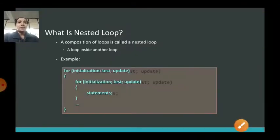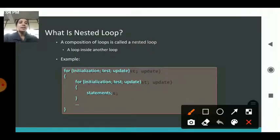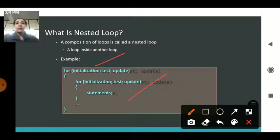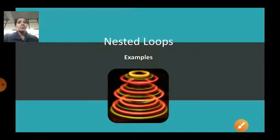Another part of for loops is your nested loop. Nested is nothing but within a loop you have another loop — then it is said to be a nested loop. Within the loop, another loop will be there. This is the syntax for it — same concept: initialization, test and update for the outer loop, and also initialization, test and update for the inner loop, and your statements are present.